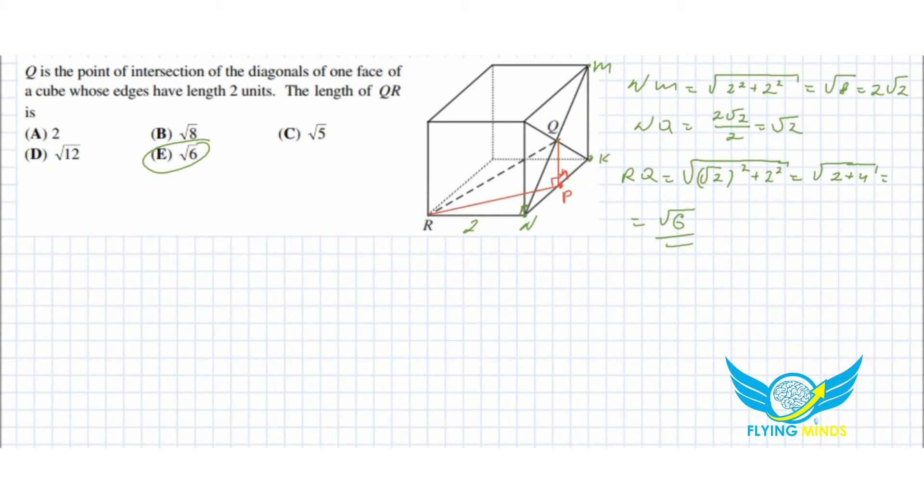I'm going to connect R and P and we have another right triangle. NP will be equal to one because this is a square. Each face is a square, point of intersection right in the middle, so QP will be equal to one unit.